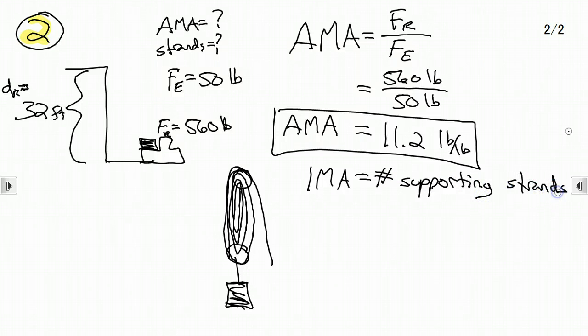Supporting strands. Now, if we had 11 strands, it wouldn't quite be enough. We can't have partial strands. So we're going to need 12 strands here, and actually we'll get a little more for our money. We can't do partial strands. We need 12 strands to reach an actual mechanical advantage of at least 11.2. The ideal mechanical advantage would be about 12.